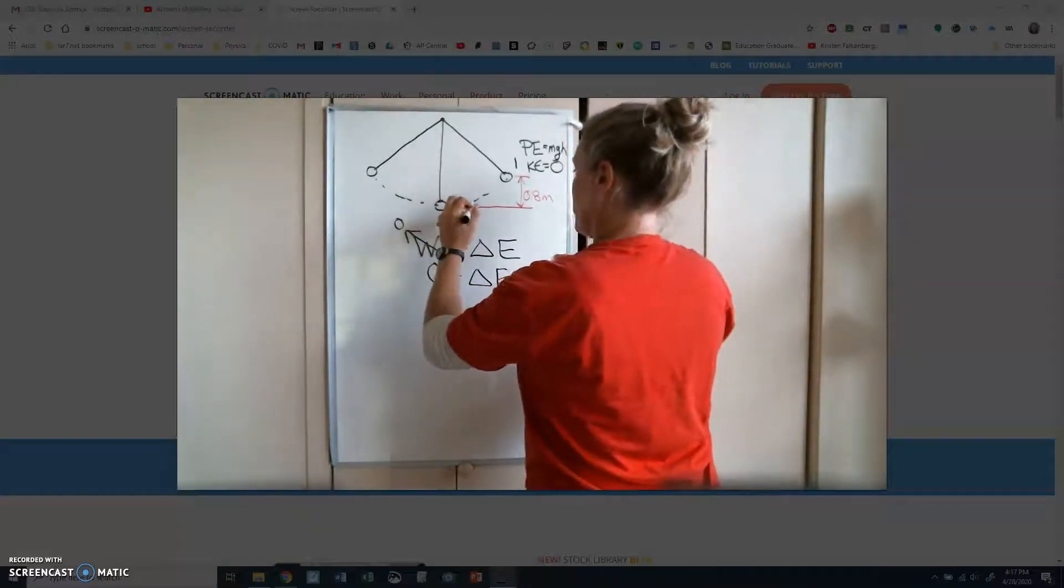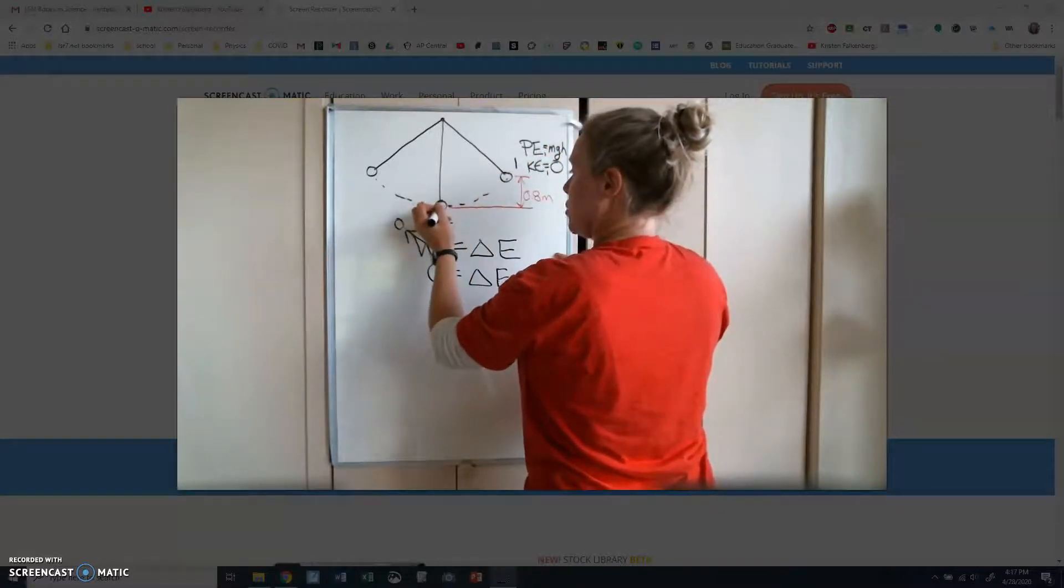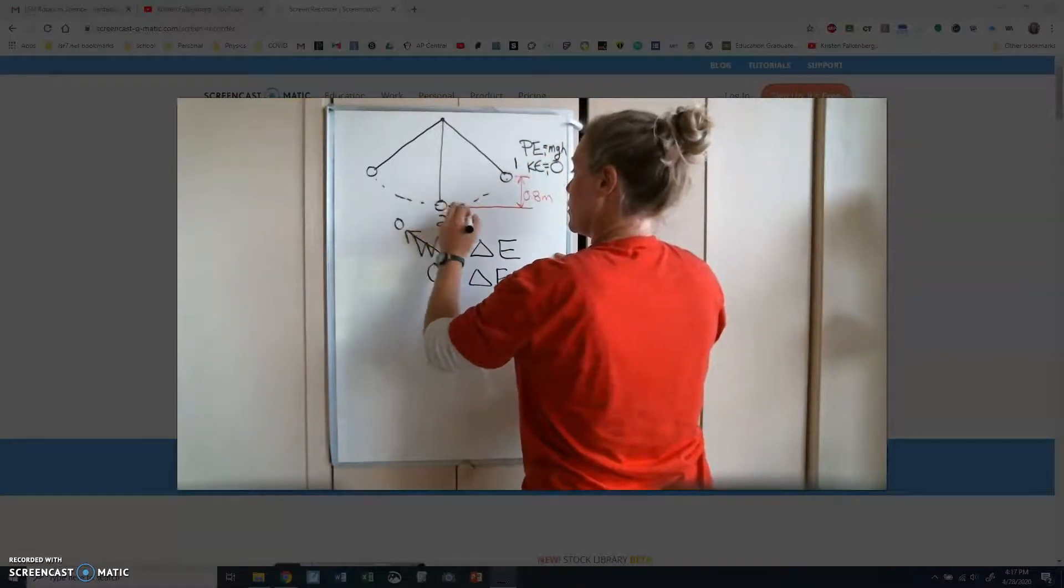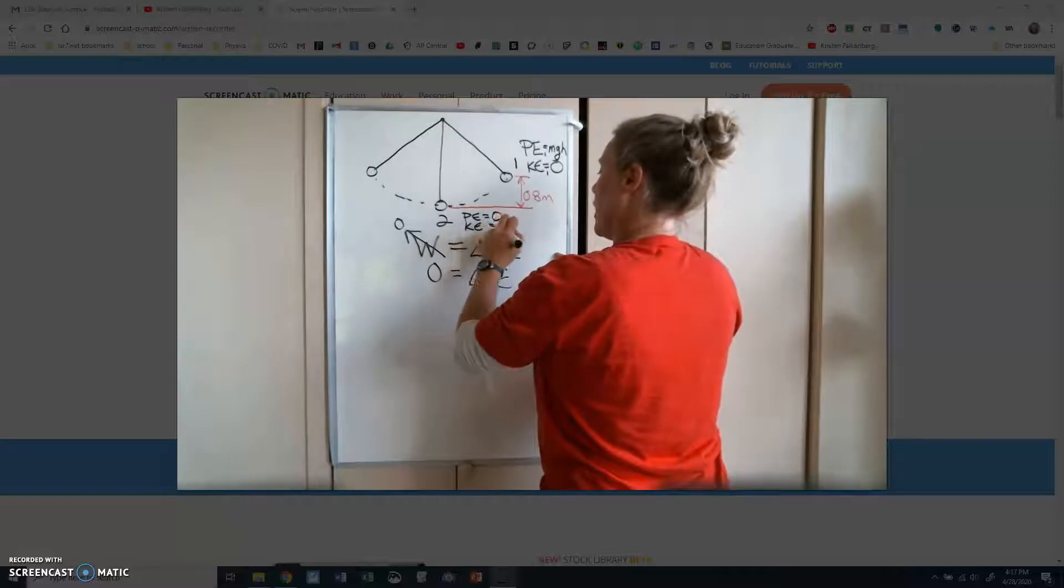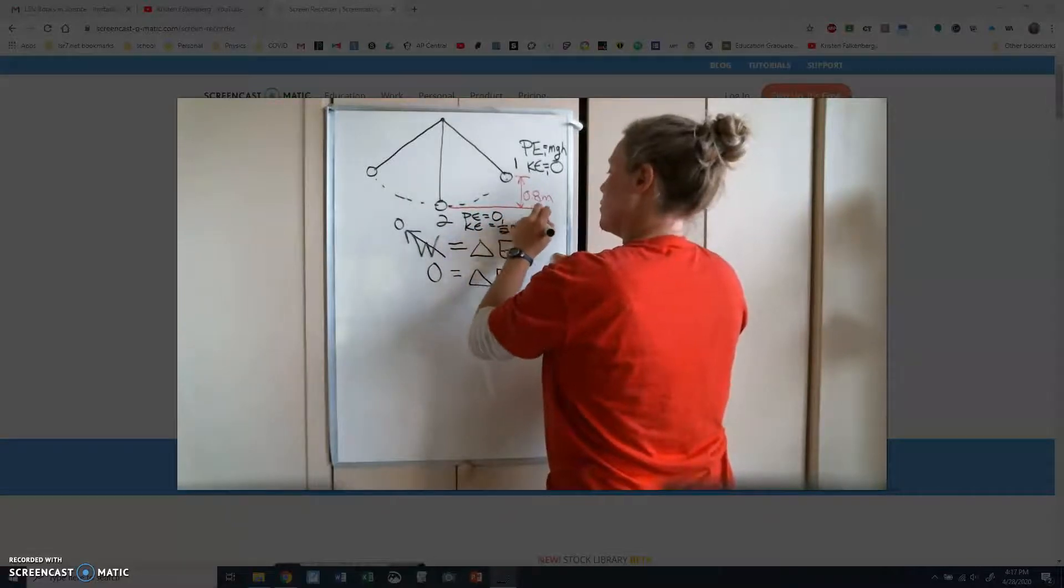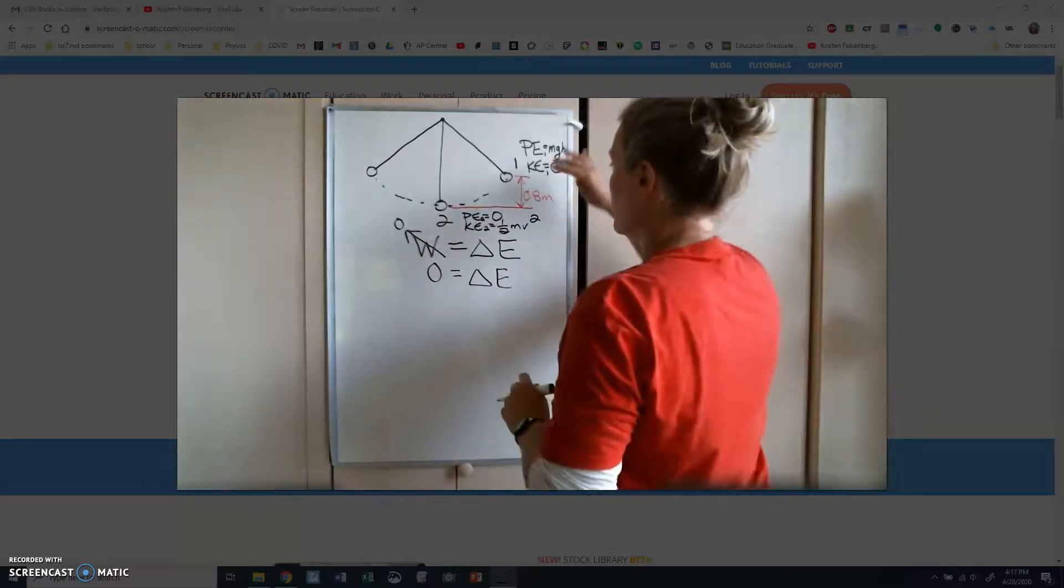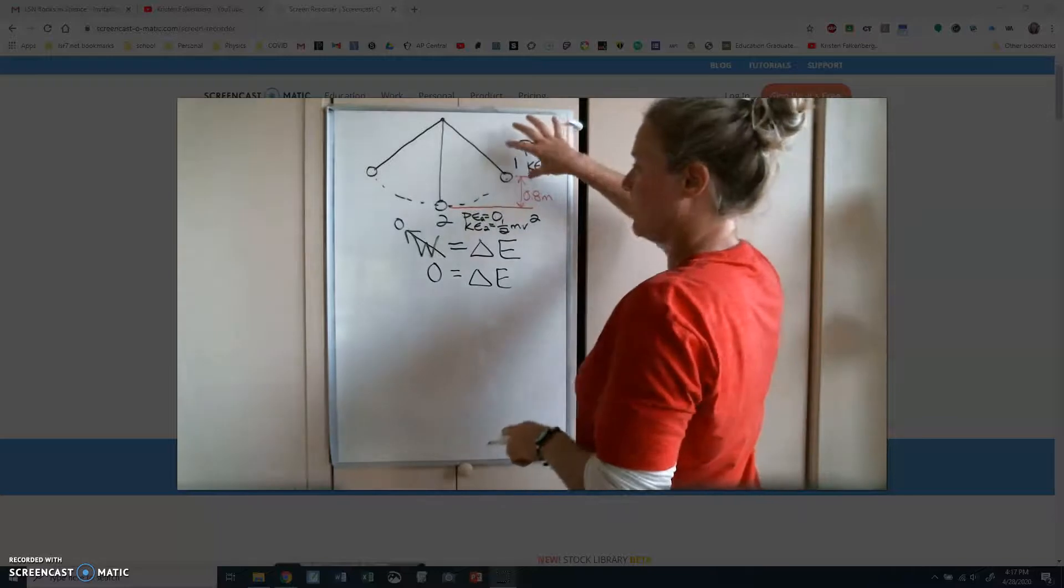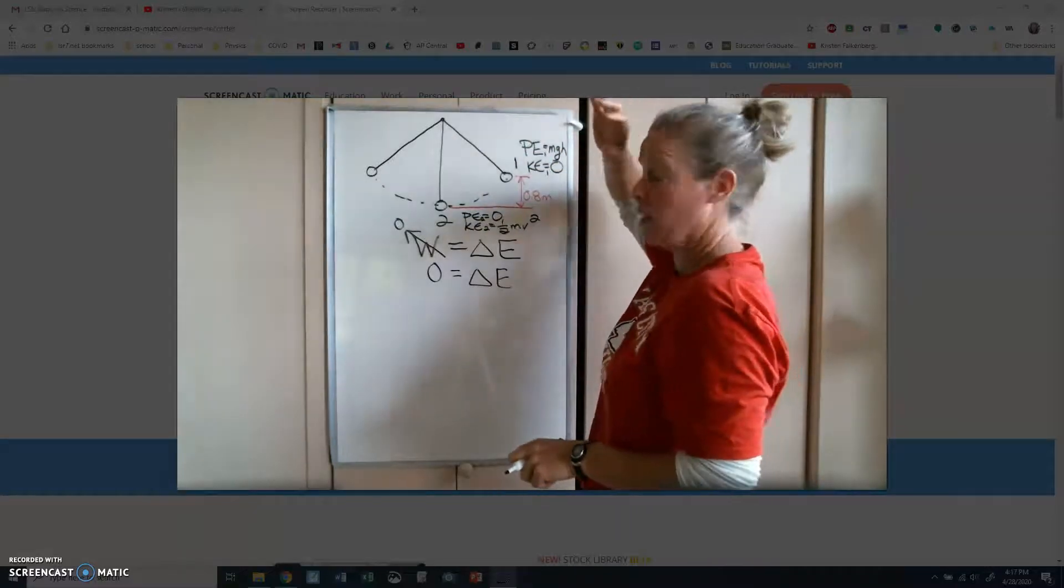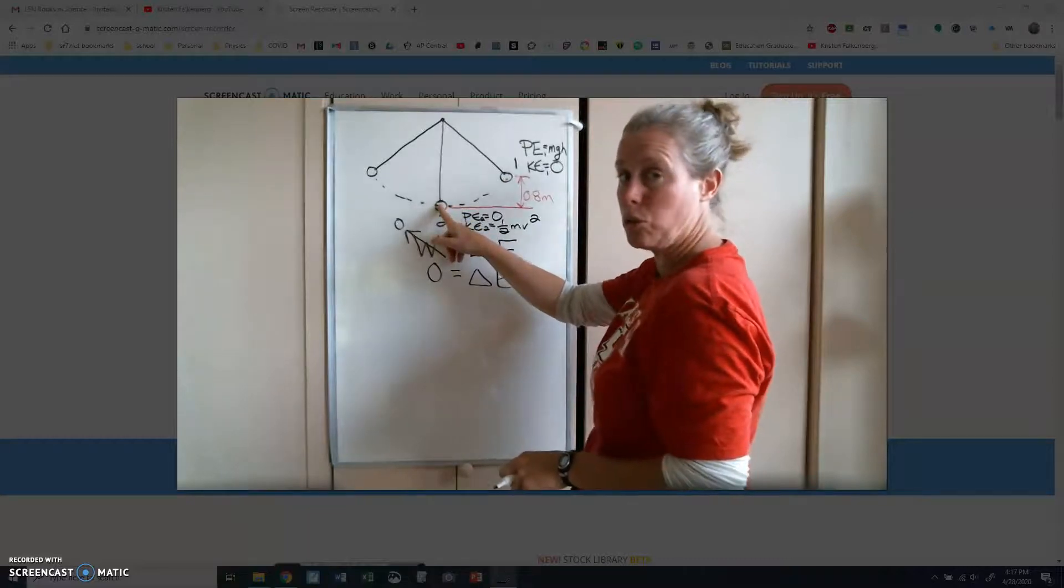And then down here at scenario two, so this is potential energy one, kinetic energy one. At state two, the potential energy equals 0, and the kinetic energy equals 1/2 mv squared. So the change in energy is 0.